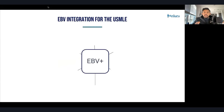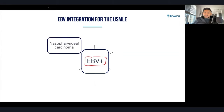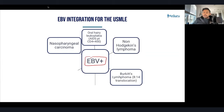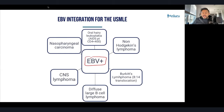There are multiple EBV integrations for the USMLE. Cancers that stain EBV positive include: nasopharyngeal carcinoma (primarily in Chinese American males), oral hairy leukoplakia (in immunocompromised patients with shaggy white patches on sides of the tongue), Non-Hodgkin's lymphoma — specifically Burkitt's lymphoma with jaw mass in the African variant and t(8;14) translocation — diffuse large B-cell lymphoma, and CNS lymphoma presenting as a ring-enhancing lesion in immunocompromised patients.